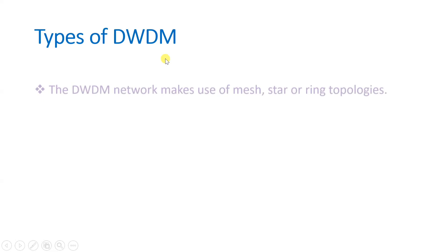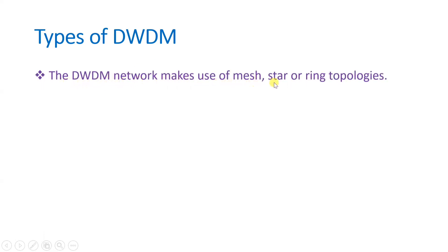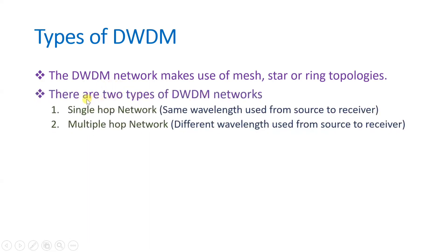DWDM networks make use of mesh, star, or ring topologies. There are basically two types: single-hop network and multi-hop network. In a single-hop network, the same wavelength is used from transmitter to receiver. In a multi-hop network, different wavelengths are used from source to receiver. For complicated routing where a single wavelength is not possible end-to-end, the multi-hop network increases capability by changing the wavelength of communication in between.